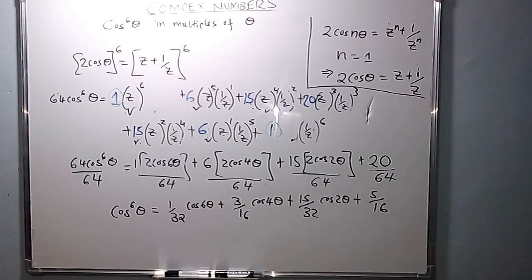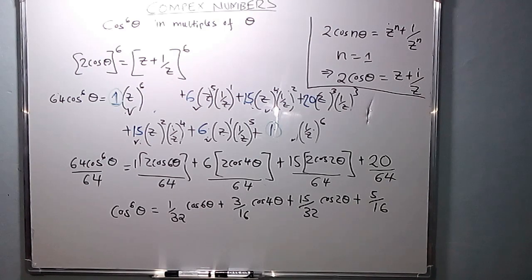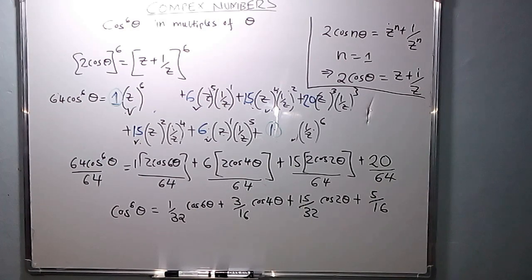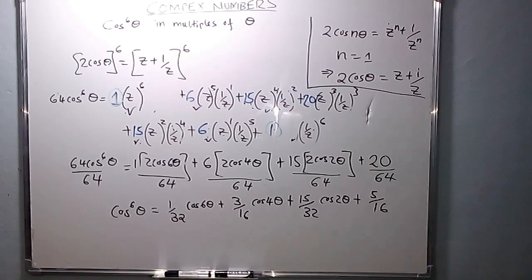So you have expressed cos raised to power 6 theta in multiples of theta: 6 times theta, 4 times theta, 2 times theta — those are multiples of theta. That is how to expand trigonometric functions in multiples of theta using De Moivre's Theorem. That is the second case of De Moivre's Theorem.